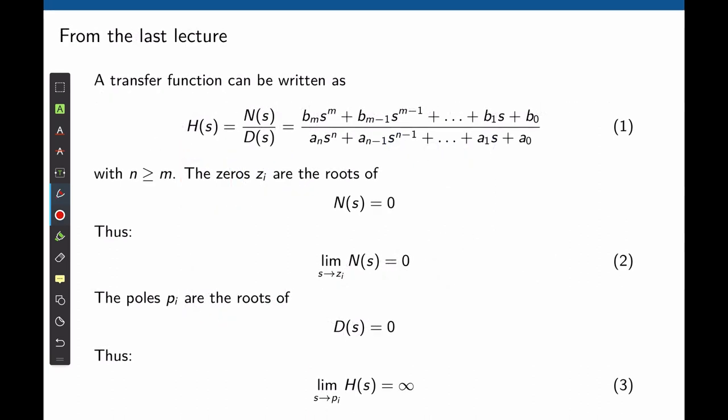The answer can be found by looking at the transfer function between the gripper's position and the commanded input. A transfer function is defined as a ratio of two polynomials of s, where b and a are the coefficients of those polynomials. For real systems, the degree of the denominator is always greater than or equal to the numerator. The zeros of the transfer function are defined as the values of s that satisfy N(s) equals zero.